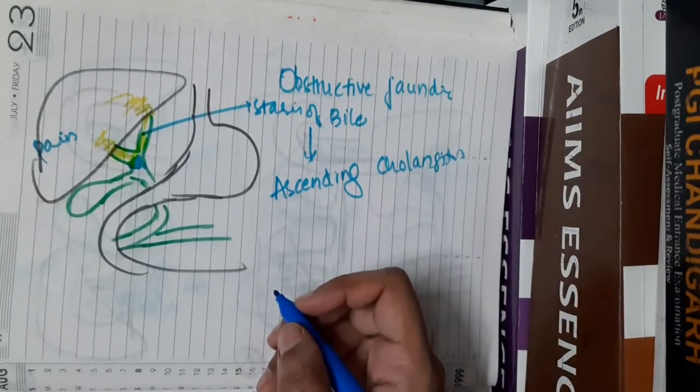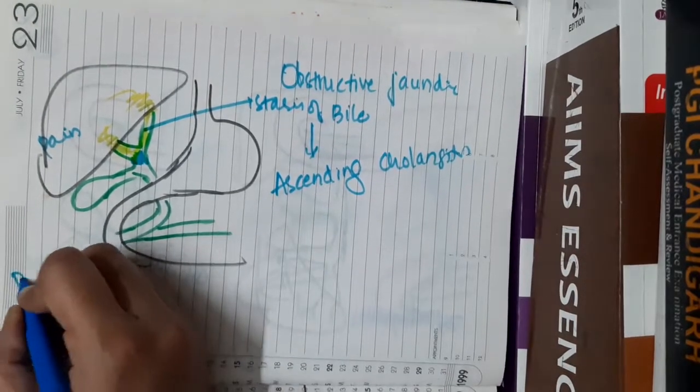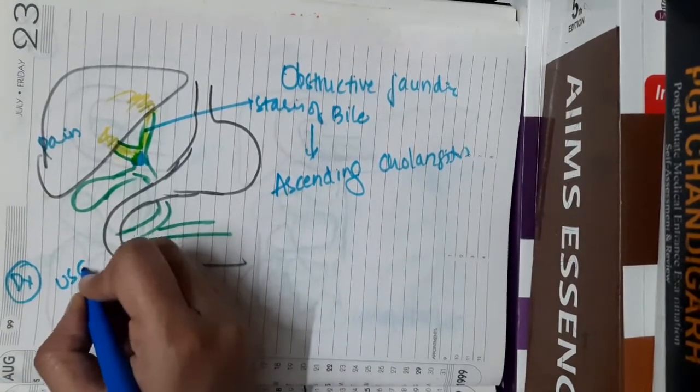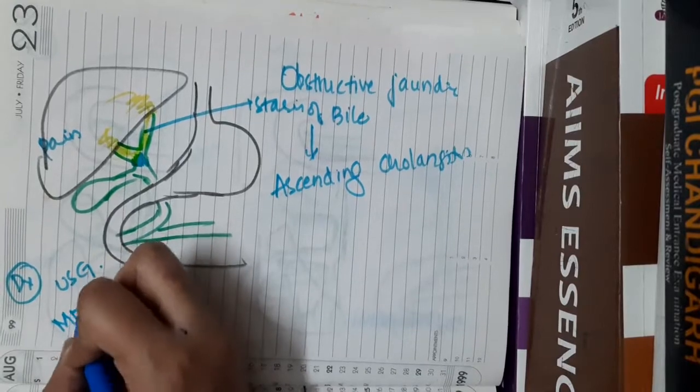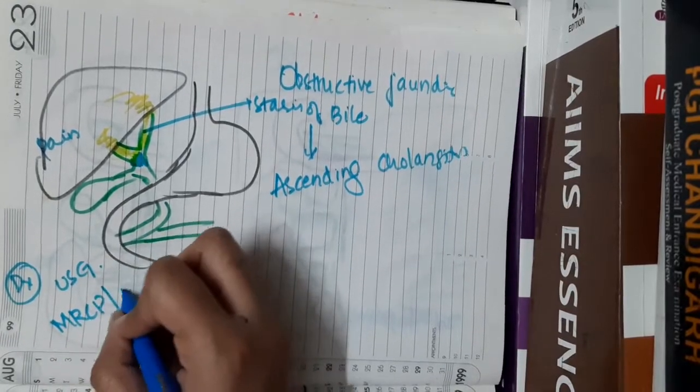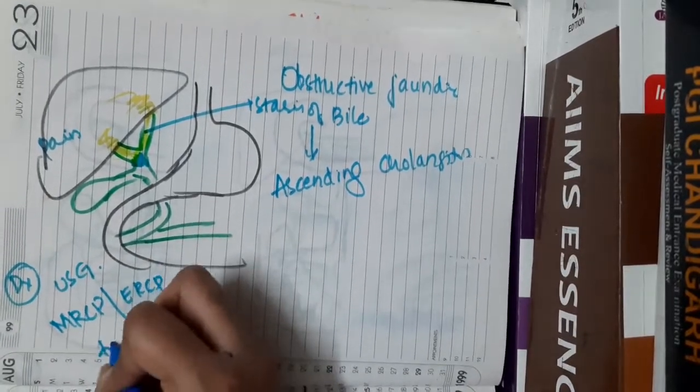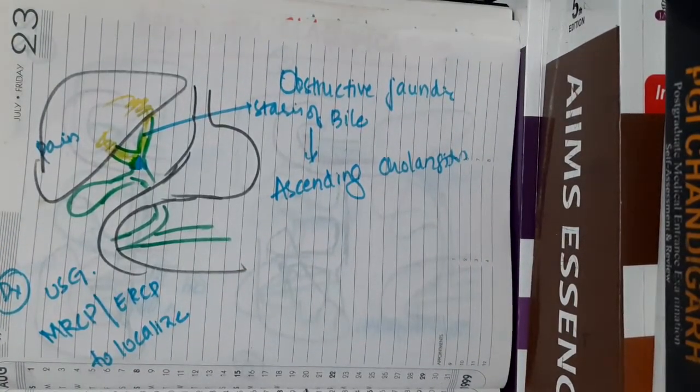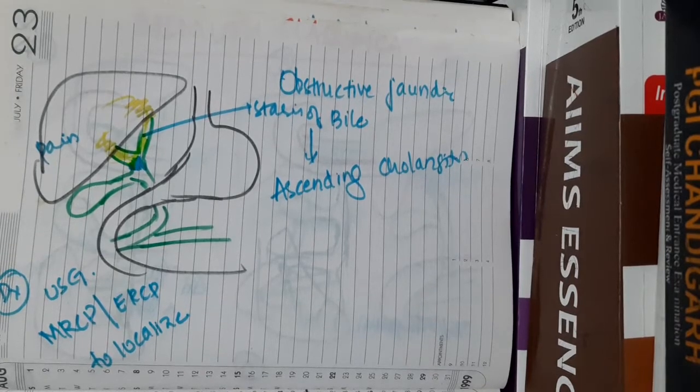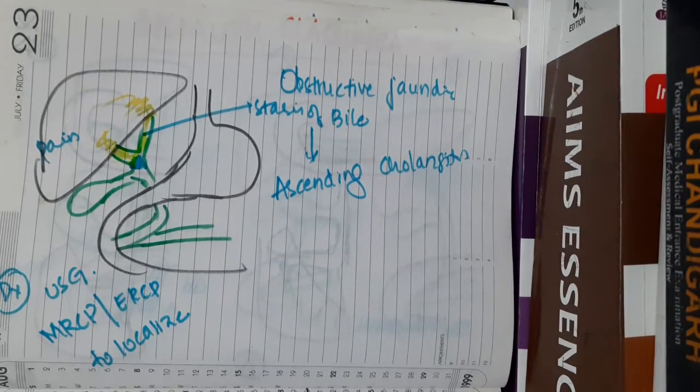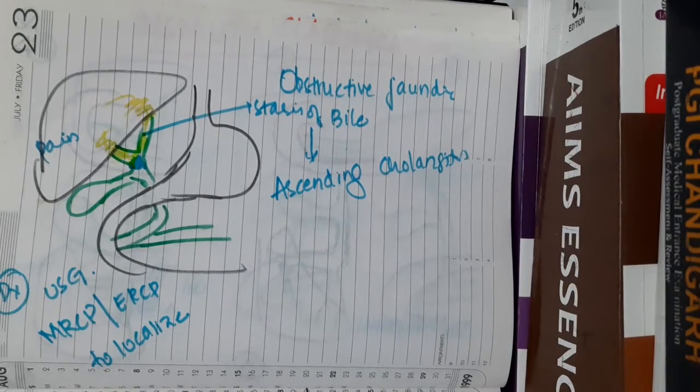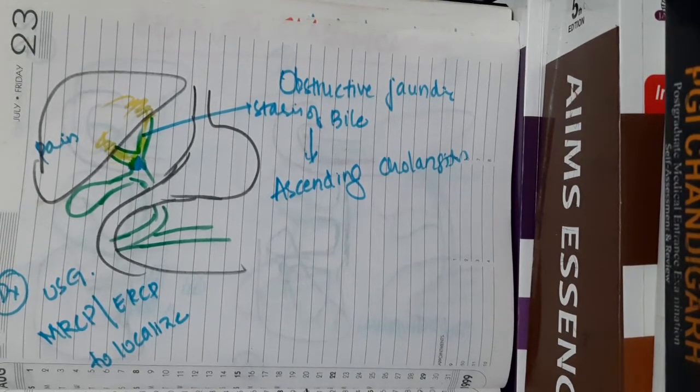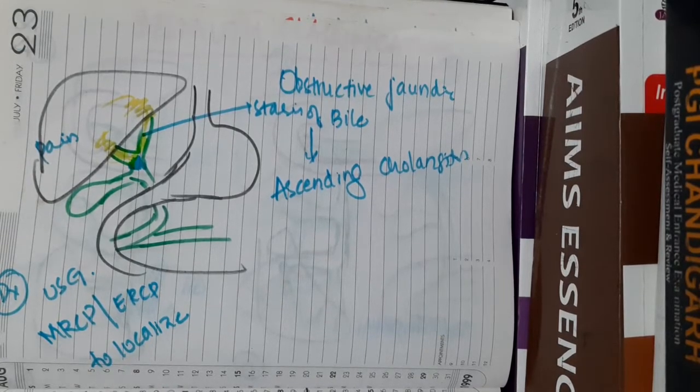How are you going to diagnose biliary strictures? You can do ultrasound abdomen, but the best is to either do MRCP or ERCP to localize the stricture. We should do either MRCP or ERCP—that is, endoscopic retrograde cholangiopancreatography or magnetic resonance cholangiopancreatography—to localize the stricture.